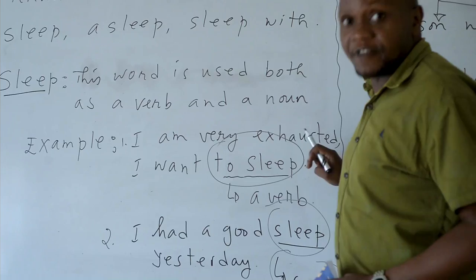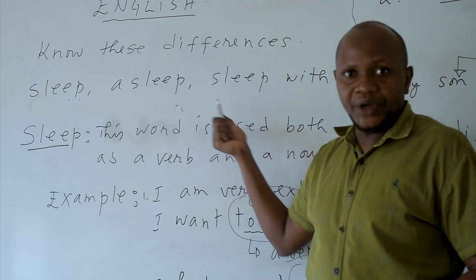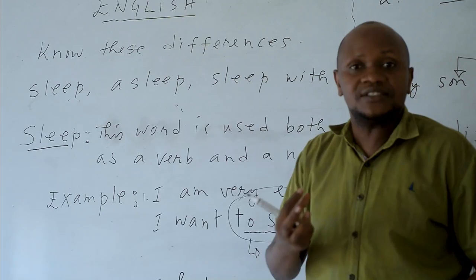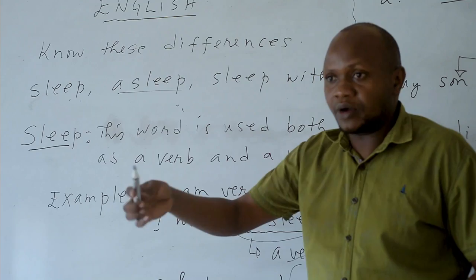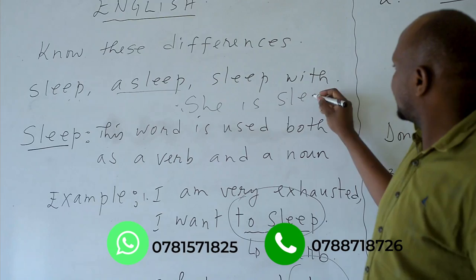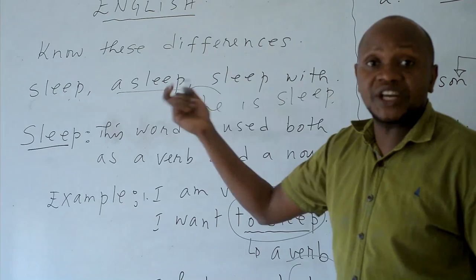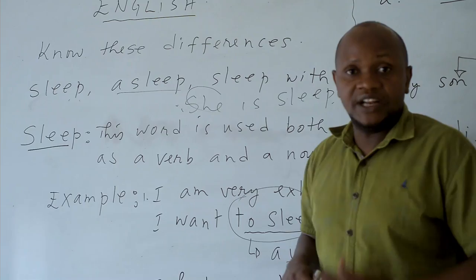Now we are going to see the difference between sleep and asleep. What is the meaning of asleep? Where do we use it? Asleep is used as an adjective. For example: she is asleep, or he is asleep. Where is Jen? Jen is asleep, which means she is sleeping. She is sleeping — that uses a verb. Asleep is used as an adjective in a sentence. It describes the noun.